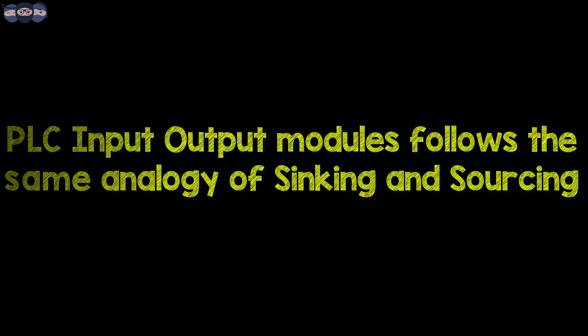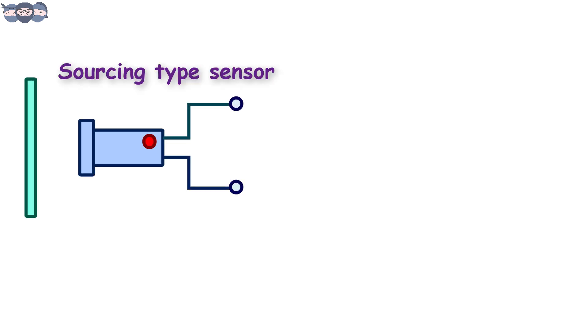The same terminology is used to denote the sinking or sourcing types of input or output modules of a PLC or a controller. If one has understood the circuit diagrams explained, it would be clear that if a sensor is sourcing type, then the input module required would be a sinking type.